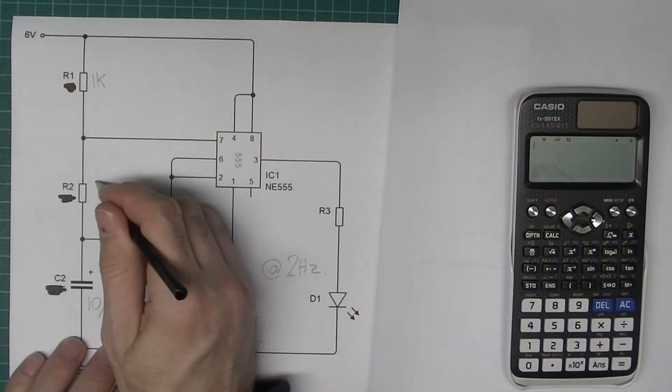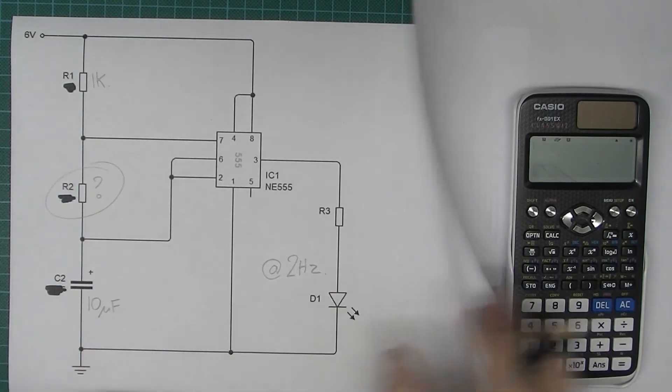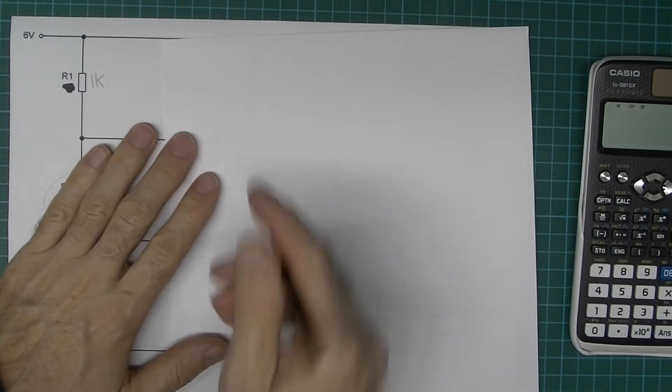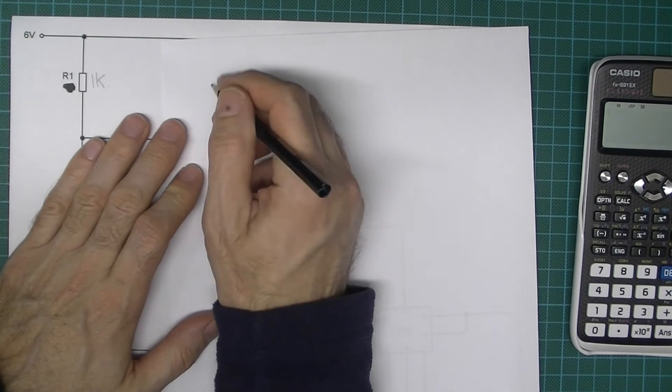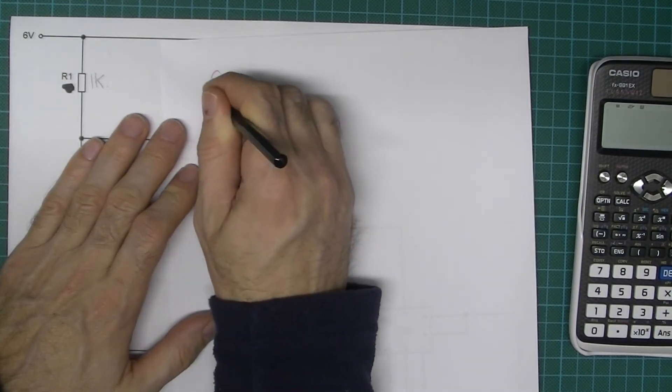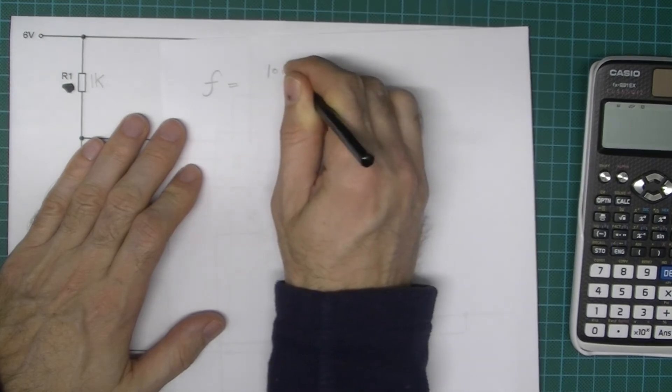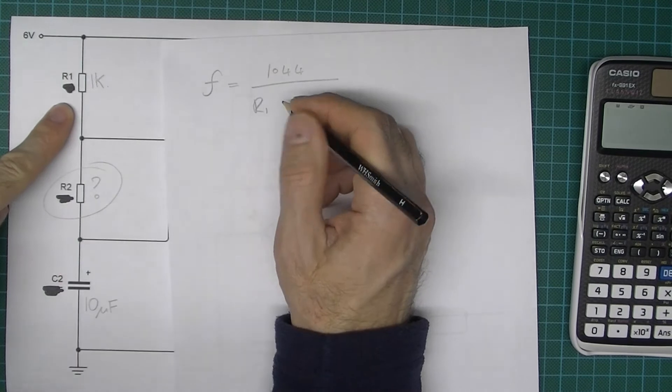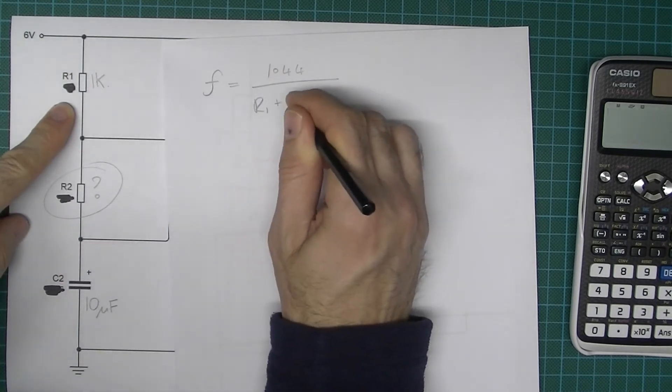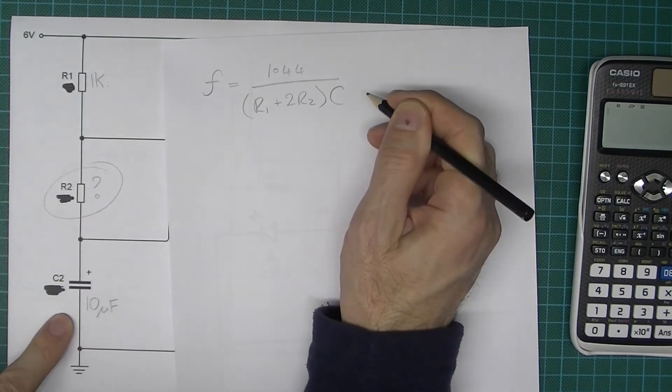Okay, so now we need to calculate a value for R2. So to do that first of all we need to write out the formula for calculating the frequency of an astable. The formula is F equals 1.44 over, in brackets, R1 plus 2 lots of resistor 2 times the capacitor.